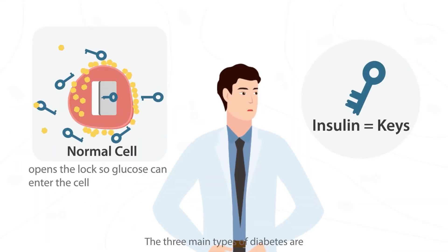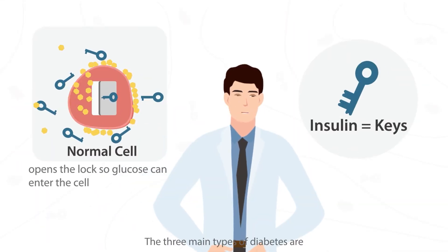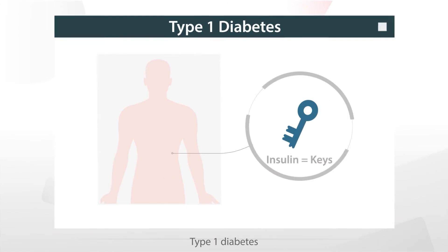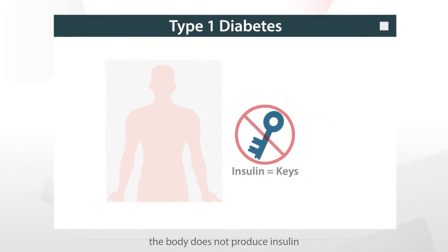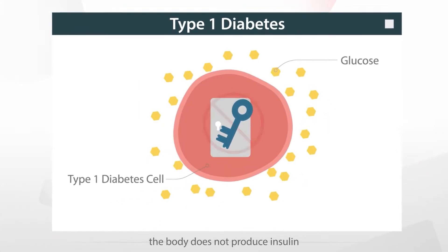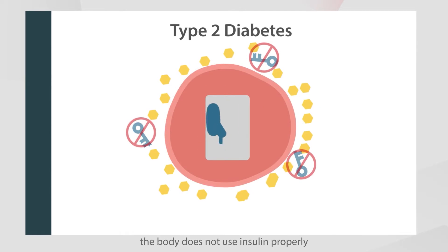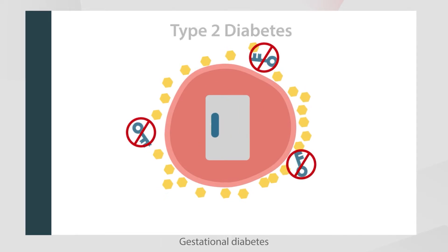The three main types of diabetes are Type 1 diabetes, where the body does not produce insulin, and Type 2 diabetes, where the body does not use insulin properly.